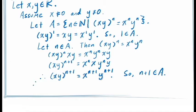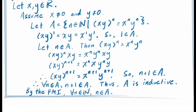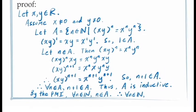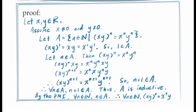We've now shown for all values of n in the set A, n plus 1 is also in the set A, which means A is an inductive set. By the principle of mathematical induction, this tells us that all natural numbers are in the set A, and so our equation holds for all natural numbers. And this completes the proof.